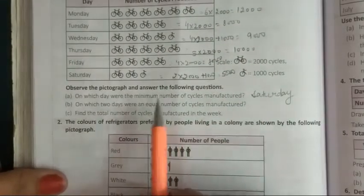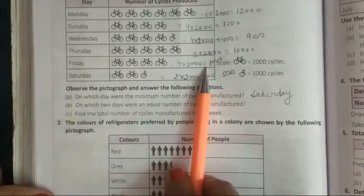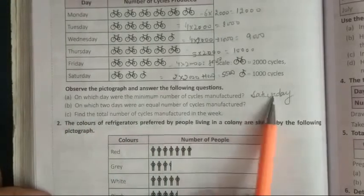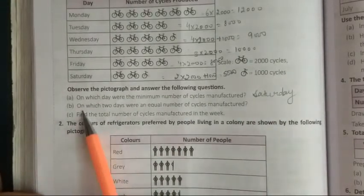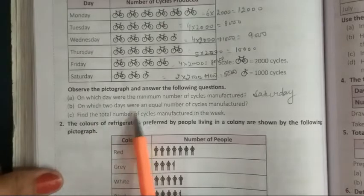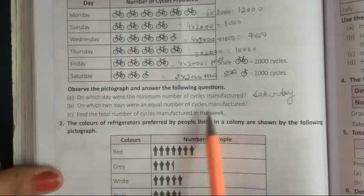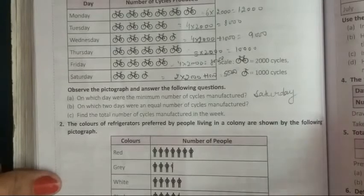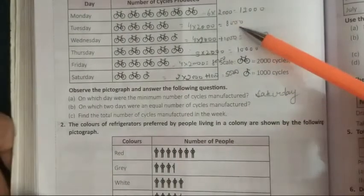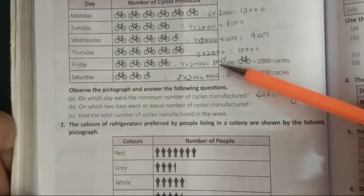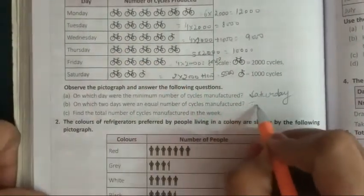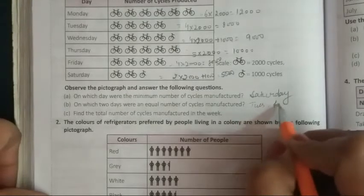Student, aapko is sum ko kaisa karna hai? Ye pictograph completely draw karna hai. Draw karne ke baad, A question ki tarah likna hai. Or phir answer likke, aapko Saturday write karna hai. Next day, on which two days? Kyn do din ho me were equal number of cycle? Matlab kyn do din ho me, jo equal number cycle jo hai, banayi gai. To hum yaha dekhenge, 8,000 ek bar yaha raha, ek bar yaha raha. To kon se dho din ho gai hai? Tuesday and Friday. To hum yaha kya likhenge? Tuesday and Friday.